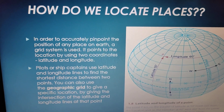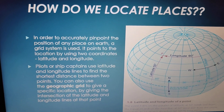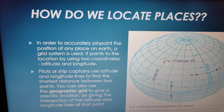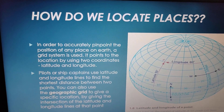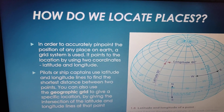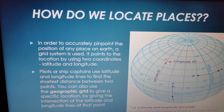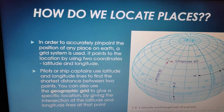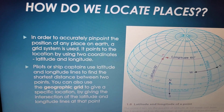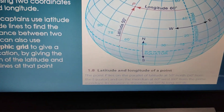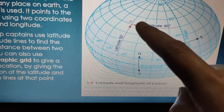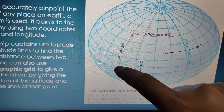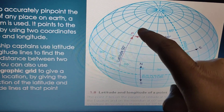Those coordinates are the actual position of any particular place on the earth. Pilots or ship captains use latitude and longitude lines to find the shortest distance between two points. You can also use the geographic grid to give a specific location by giving the intersection of the latitude and longitude lines at that point.